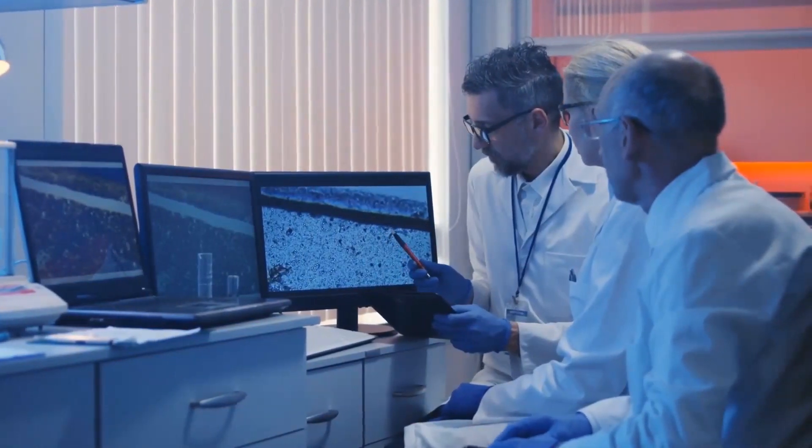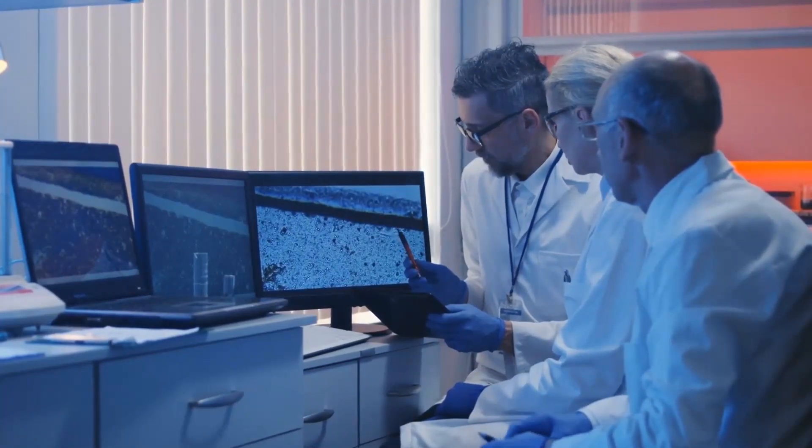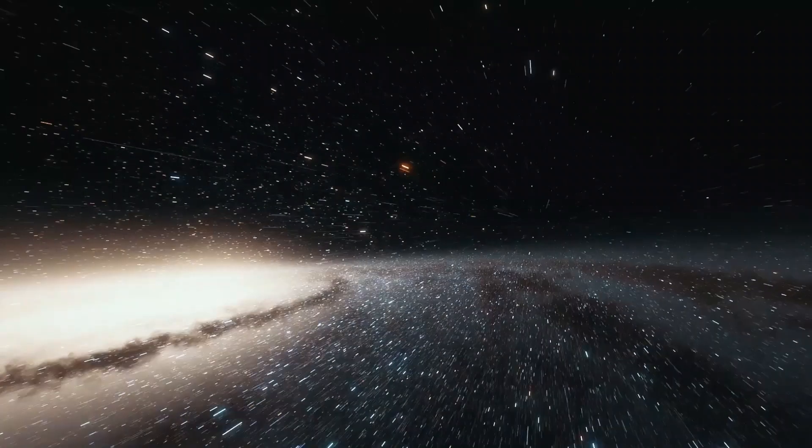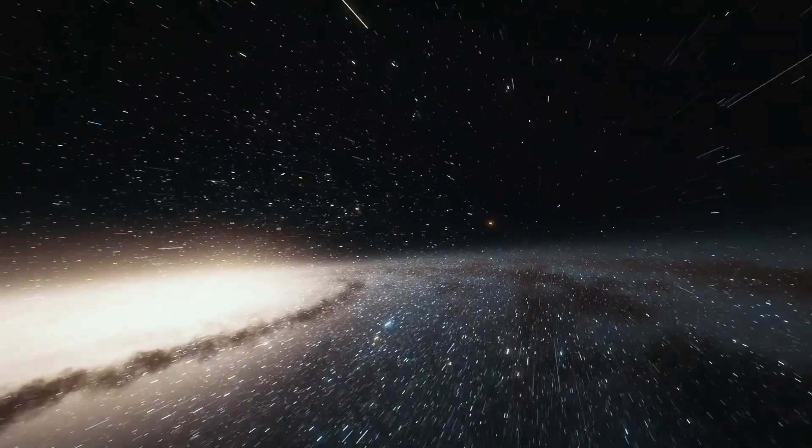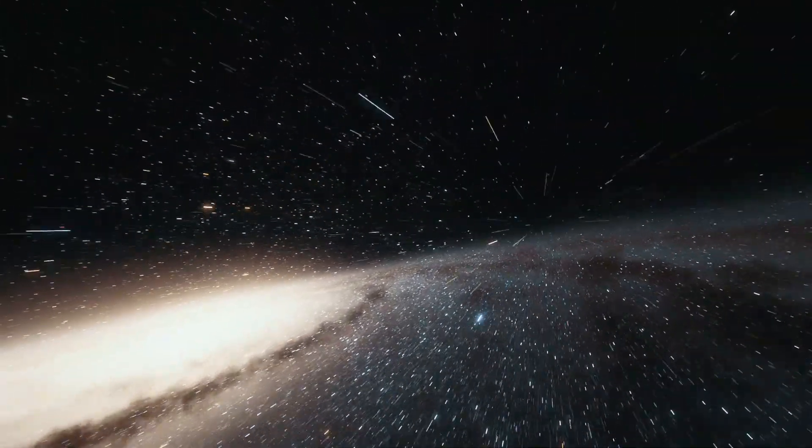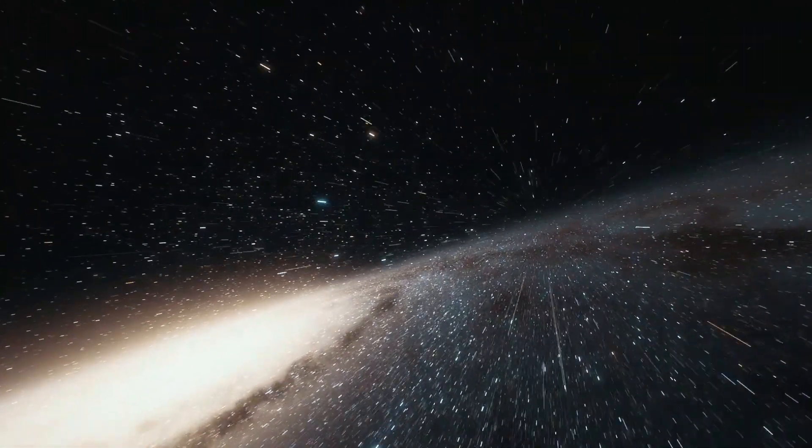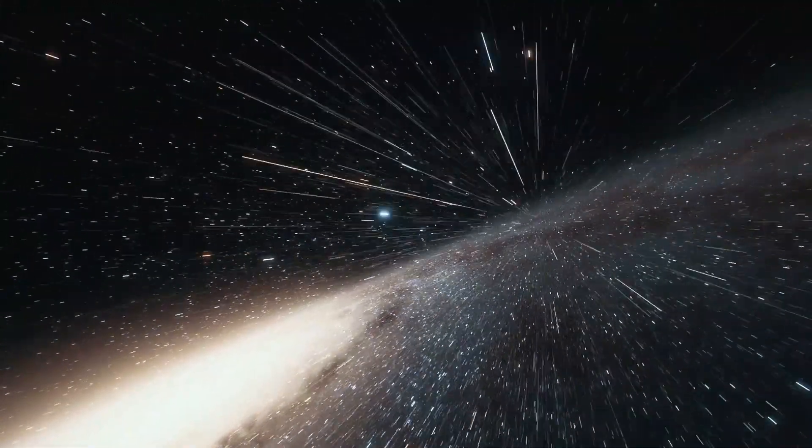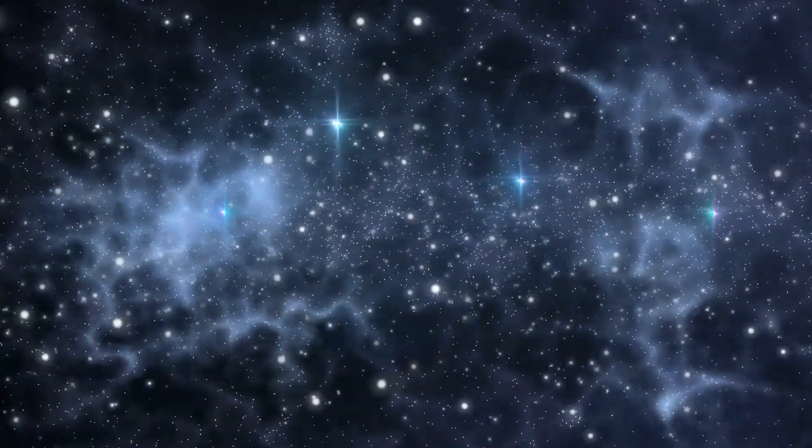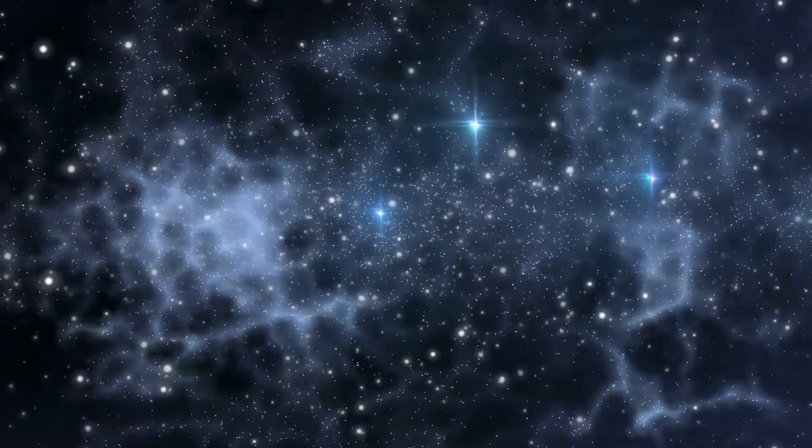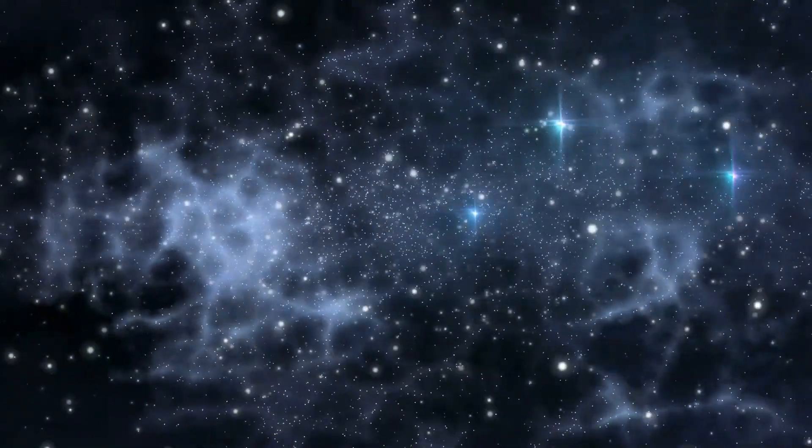Scientists suggested that supernovas happen when ordinary stars collapse into neutron stars. According to research by the European Space Agency, on average, a supernova will occur once every 50 years in a galaxy the size of the Milky Way. The U.S. Department of Energy estimates that a star explodes every 10 seconds or so somewhere in the universe.